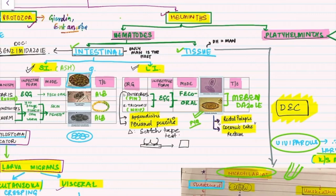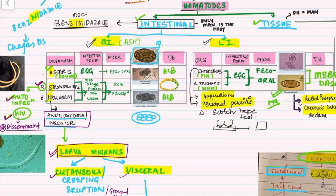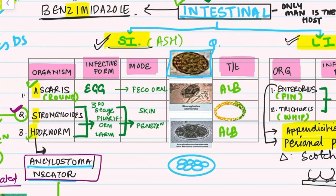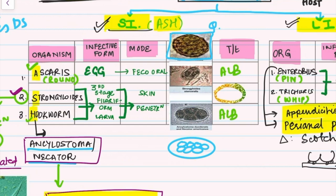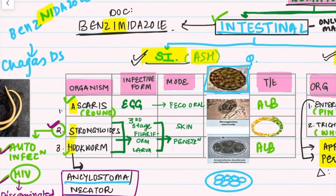Let's deal with nematodes first: the intestinal and the tissue nematodes. In the intestinal nematode part, either they penetrate into the small intestine or the large intestine. Under the small intestine we see three organisms, remembered by the mnemonic ASH: A for Ascaris, S for Strongyloides, H for Hookworm. The infective form for Ascaris is the egg — the common name is roundworm, mode is feco-oral, and the image of the egg is very important and often asked as a previous year question.